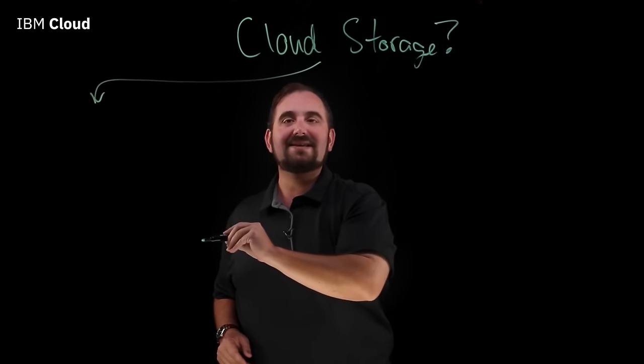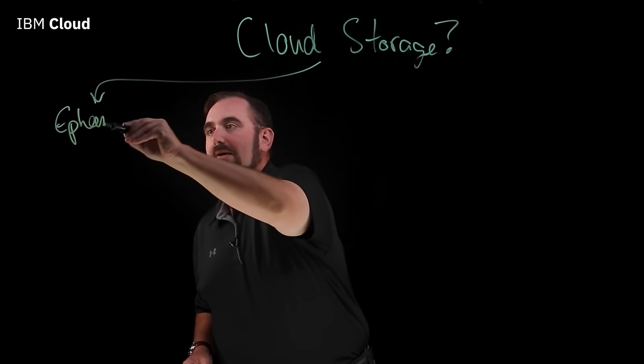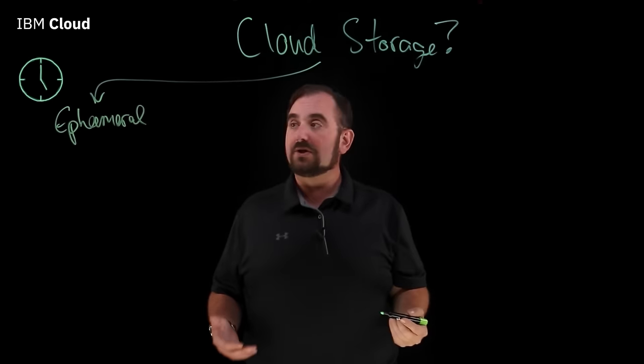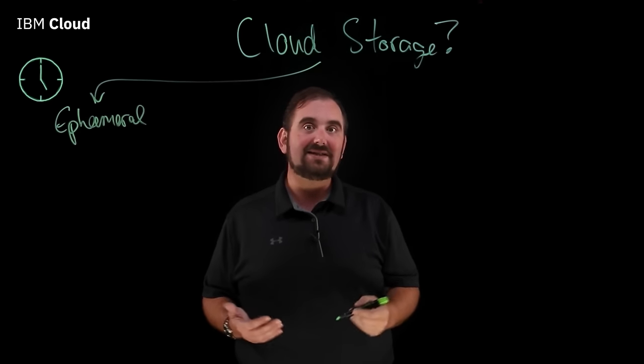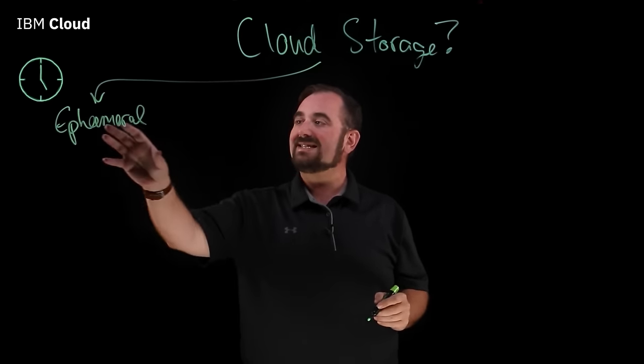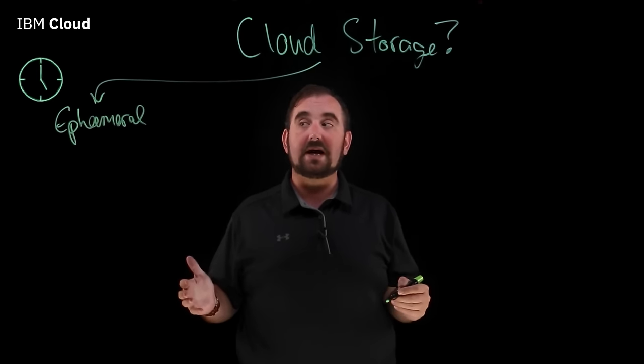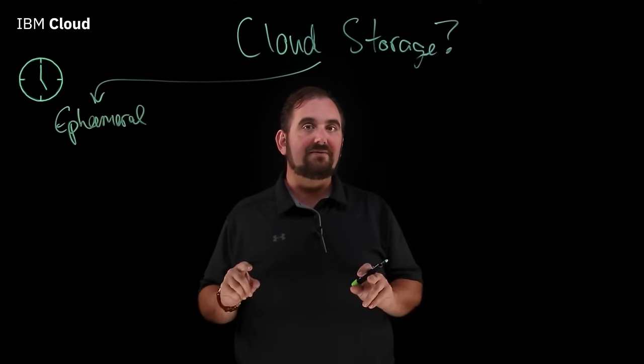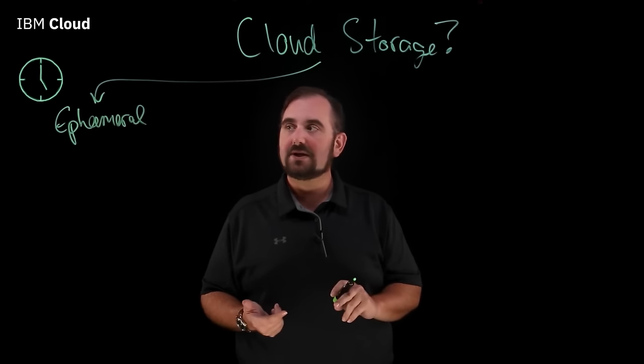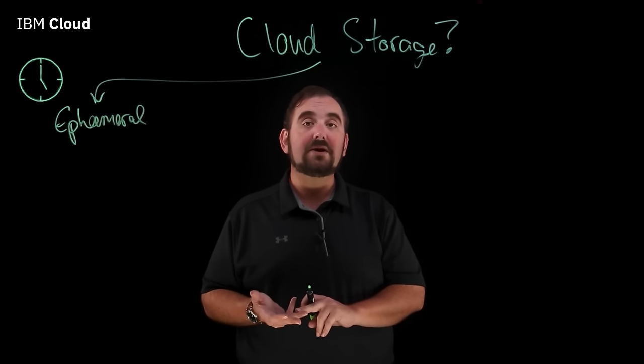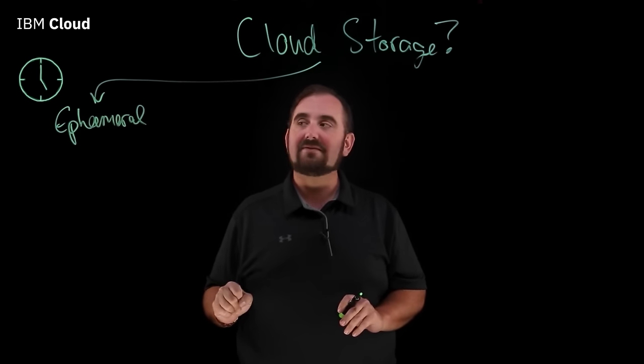What is cloud storage? There are two important distinctions in cloud storage, two primary branches. The first one is ephemeral storage. Ephemeral means fleeting — it means that it doesn't stay around forever. Ephemeral exists whenever you have a virtual server that is up and running and the ephemeral storage is attached to it. But when that virtual server goes away, either because you cancel it or because the underlying host crashes or something else goes wrong, you lose everything that is running in that ephemeral storage.